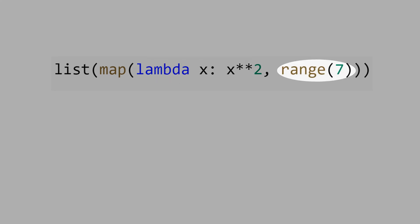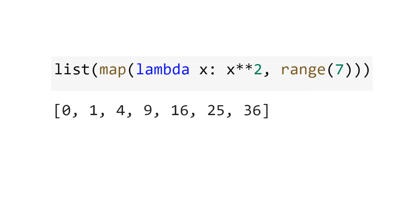Lambda is the function, range 7 is the input. To combine both and get the output, we have to use map. And then we use list to get a list of numbers. And here is the result.